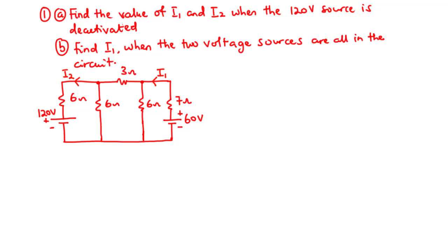Let's try this problem using superposition theory. We have a circuit which contains two voltage sources: 120 volts and 60 volts, and five resistors. We are asked to find: A) the values of I1 and I2 when the 120 volt source is deactivated, and B) the value of I1 when both voltage sources are in the circuit.